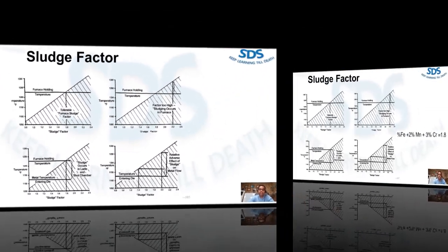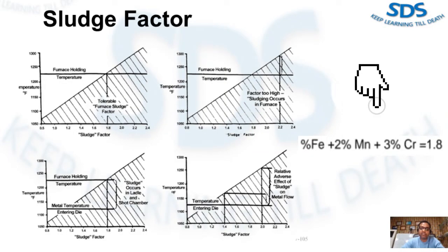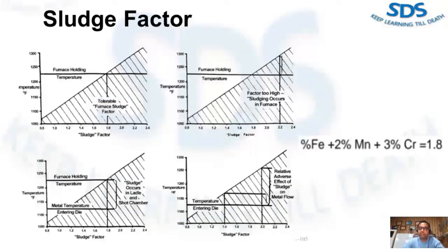Sludge formation is dependent both on composition and temperature. Most die casters utilize a sludge factor that governs sludge formation. If the sludge factor exceeds 1.8, there is a sludging tendency. The sludge factor can be calculated using a specific formula. This image describes graphically how the sludge factor works — the sludge factor present determines the minimum furnace holding temperature.